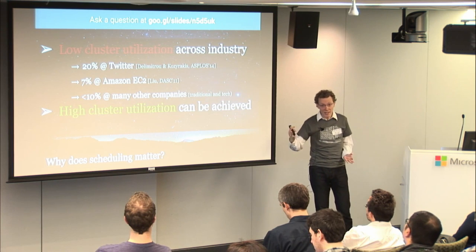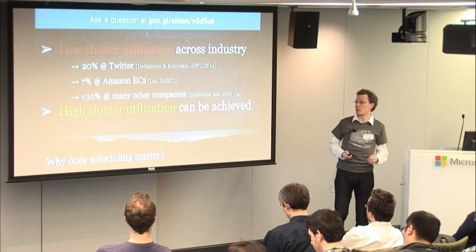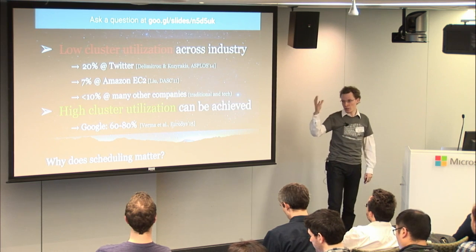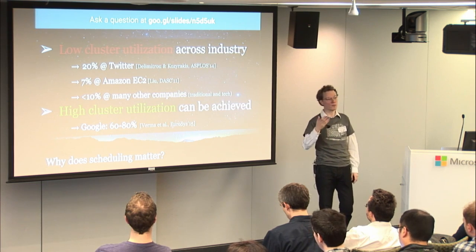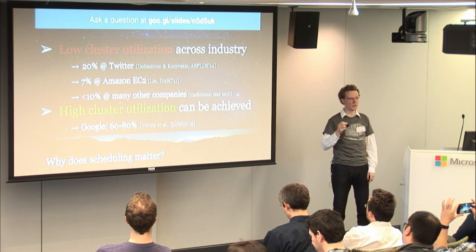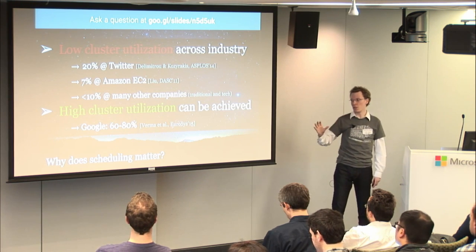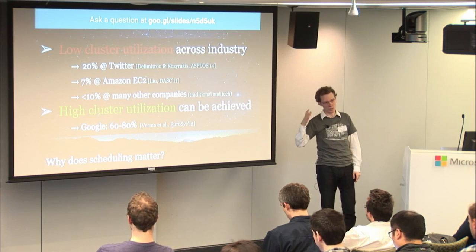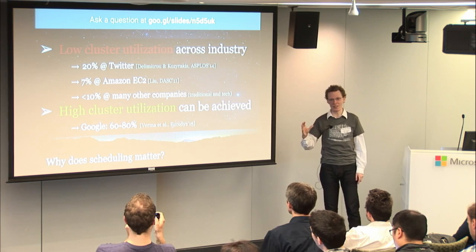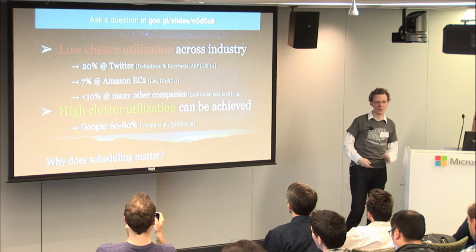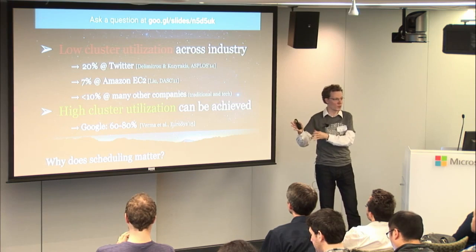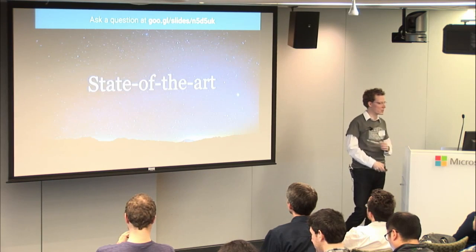However, the good news is we can actually achieve high utilization. The key example is Google's infrastructure. If you look at the Borg paper from EuroSys 2015, you find that Borg achieves between 60% and 80% actual utilization of the machines — significantly higher. That's really the goal: not to waste any resources.